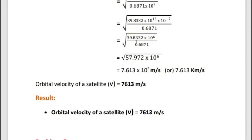Dividing: 39.8332 / 0.6871 = 57.972. So V = √(57.972 × 10⁶) = 7.613 × 10³ m/s. In km/s, 10³ is written as kilo, so the orbital velocity is 7.613 km/s. Result: orbital velocity of the satellite V = 7.613 × 10³ m/s.